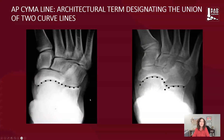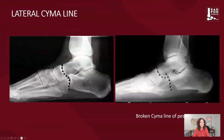When looking at the cyma line, this is an architectural term designating that the union of two curves is angulated. In the normal situation, the cyma line is seen as a smooth, continuous curve. But in the broken cyma line — which we can see when there is abnormal biomechanics and abnormal alignment — it becomes angulated. The lateral cyma line is again a smooth, continuous articulation of Chopart's joint, and here we can see the angulation: the broken cyma line in someone who has pes planus.